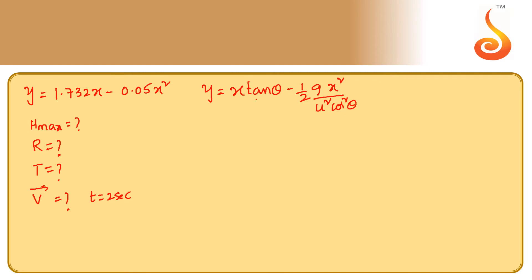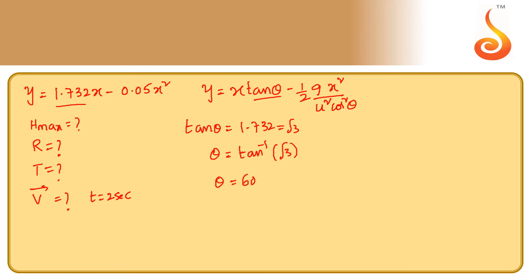From this comparison, tan θ = 1.732, which is nothing but √3. Therefore, θ = tan⁻¹(√3), so θ = 60 degrees.